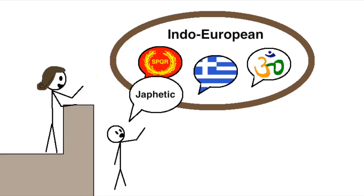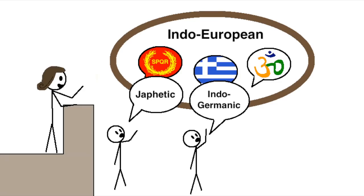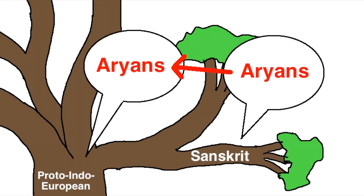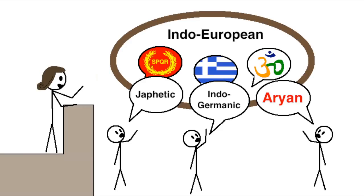But some people wanted to call them the Japhetic languages after a character from the Bible, and some people in Germany wanted to call them the Indo-Germanic languages, because of course they did. But some people noticed that at least some of the authors of ancient Sanskrit texts called themselves Aryans, and from there inferred that the original Proto-Indo-Europeans also called themselves Aryans, and thus they preferred to call it the Aryan language family.